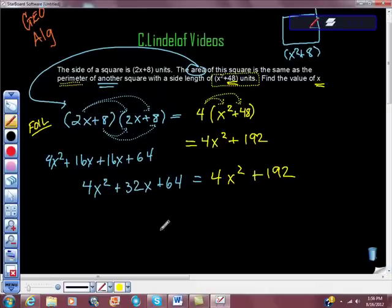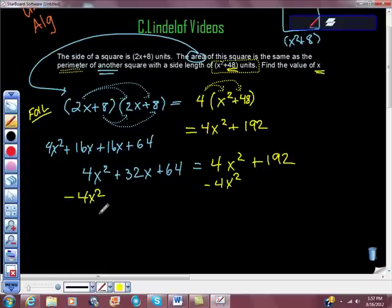So I'm going to gather like terms here. I'm going to move all the constants to the right-hand side, and I'm going to move all the variables to the left-hand side. So I'm going to get rid of this positive 4x squared by adding negative 4x squared to both sides. And that gives us, this plus this is 0, so it gives us 32x plus 64 is equal to 192.